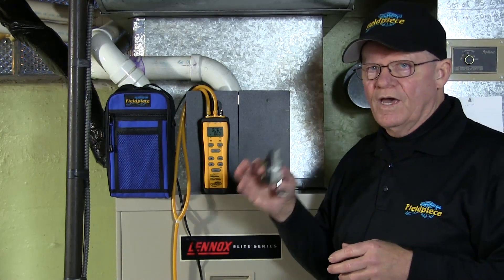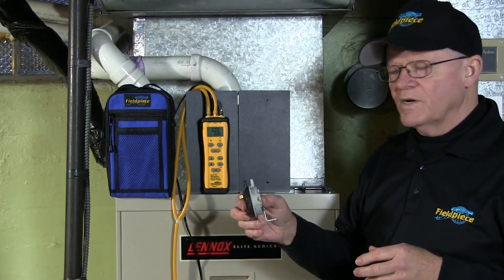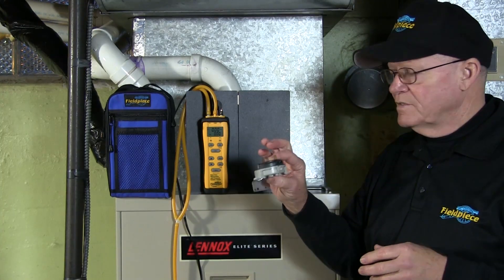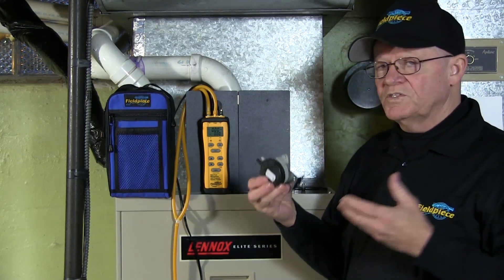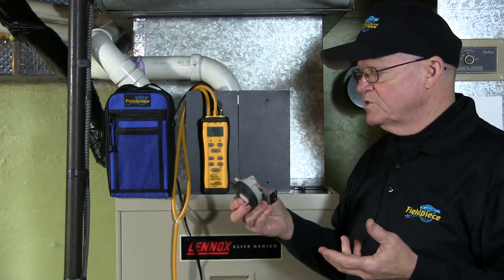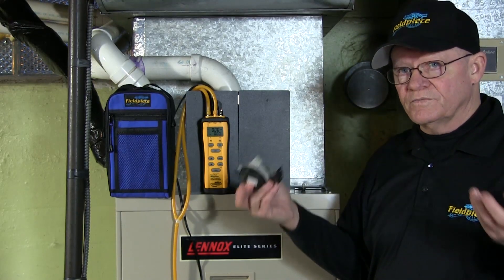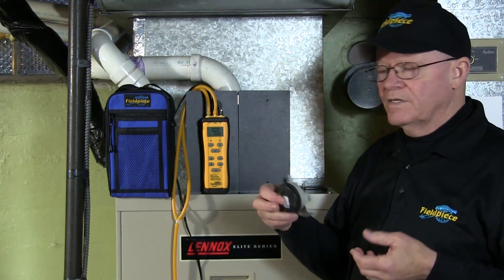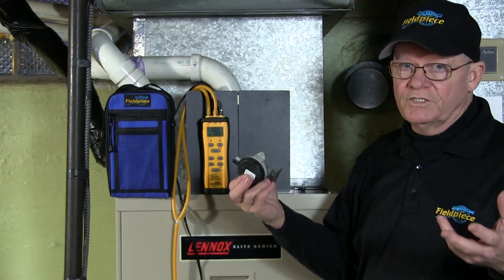So what I'm going to do now is show you how to calibrate an adjustable pressure switch. Now this particular pressure switch comes with different springs. These different springs are for different ranges of tension. Basically, you're looking at different pressure ranges.